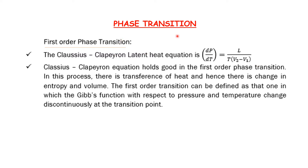Phase transition is a change in state from one phase to another. First order phase transition is a change in state involving entropy, volume, and energy. The various solid to liquid and gas transitions are classified as first order transitions.